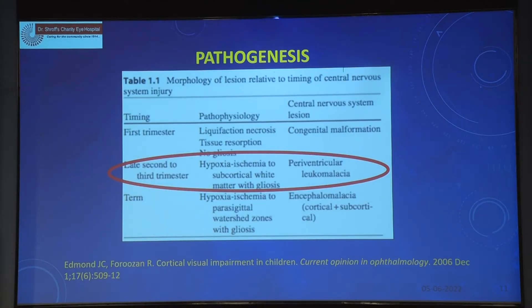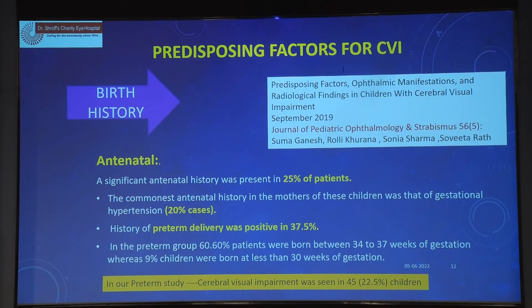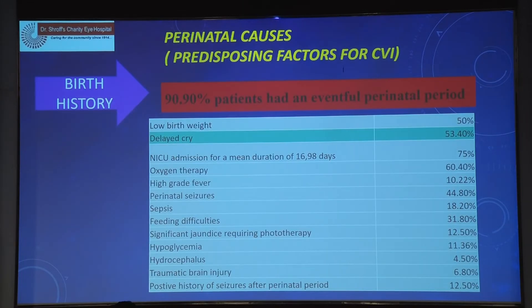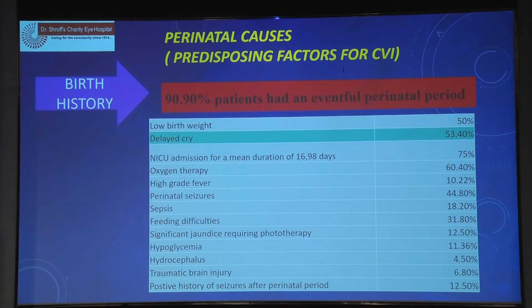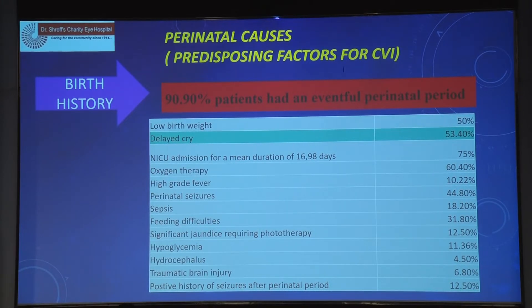If the hypoxic event is in the late second to third trimester, it is mainly in the subcortical white matter with gliosis — called periventricular leukomalacia. If it is at term, it is called ankylomalacia. We published a paper and found preterm delivery was positive in 37.5% of patients, with many born between 34 to 37 weeks of gestation. During ROP screening we give a card telling parents that around 30% of preterm babies may have CVI after six months or one year. 90.9% of our patients had an eventful perinatal period, so this history is very important.